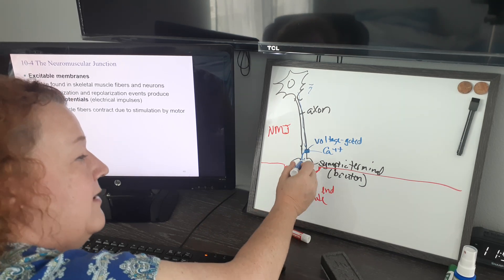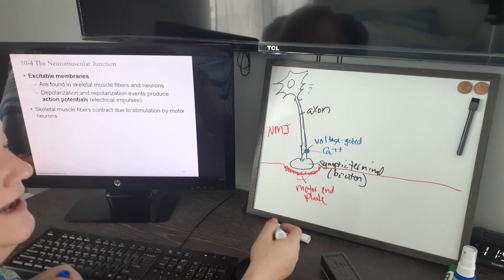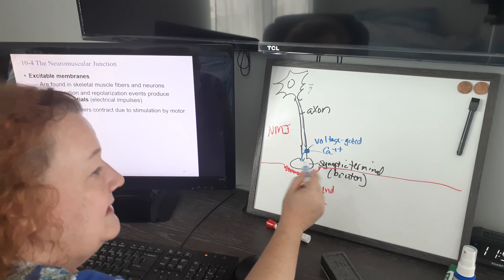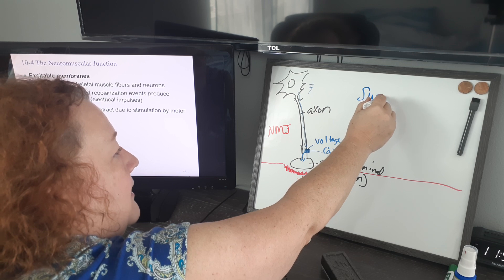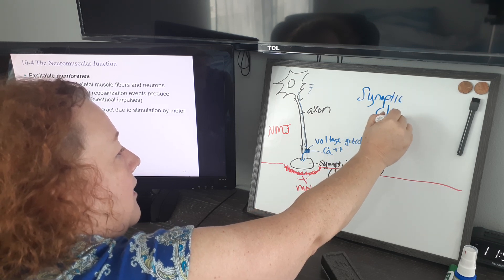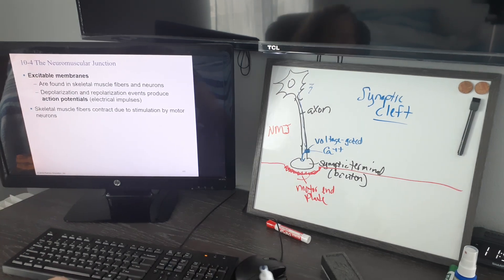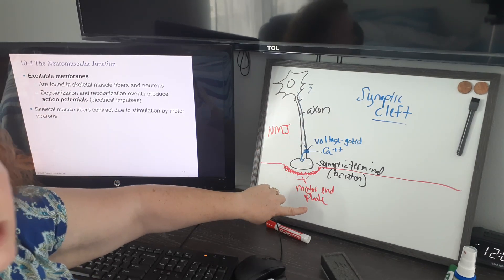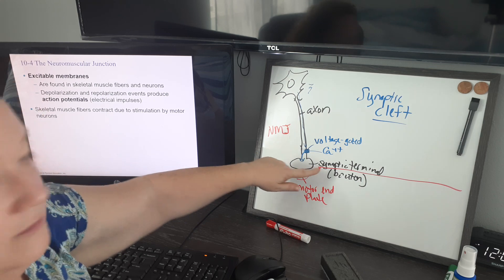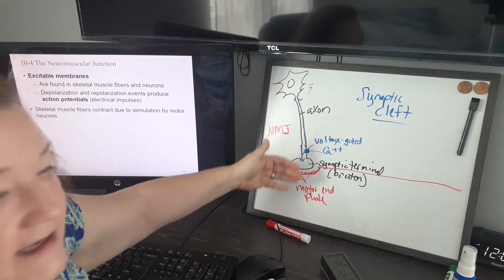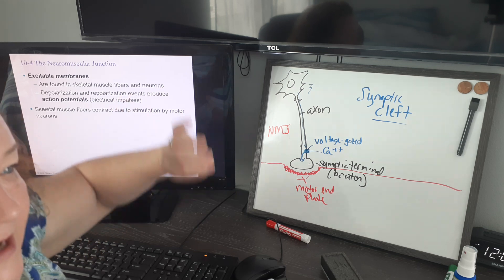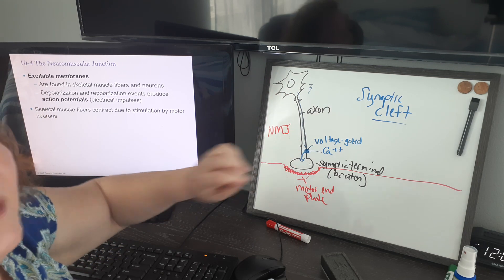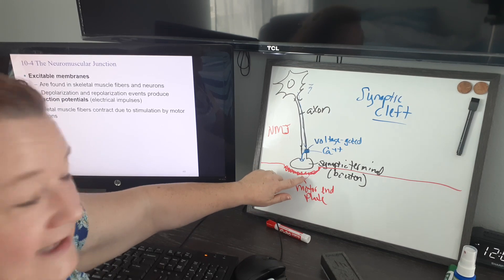Since the area where a neuron interacts with any other cell is called a synapse, this space is called the synaptic cleft — it just means a gap. We have electrical current that wants to tell the muscle cell what to do, but it gets down to the end of the neuron and can't get across. So we have to do a quick switcheroo: we have to change our signal from an electrical current into a chemical signal that can cross this gap.